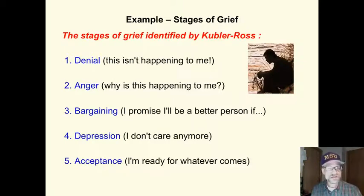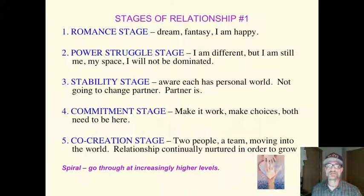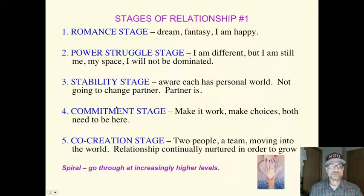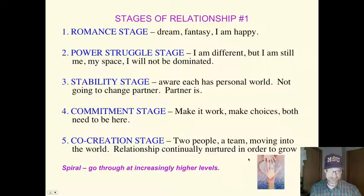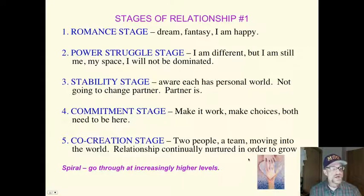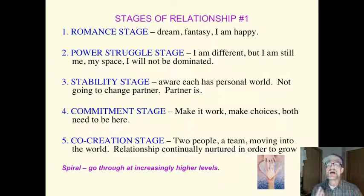We're talking about cognitive development stages and Piaget. This is good background information. Stages in a relationship: the romance stage, power struggle, stability stage, commitment stage, and then co-creation. It's a spiral — we go through each at increasingly higher levels.